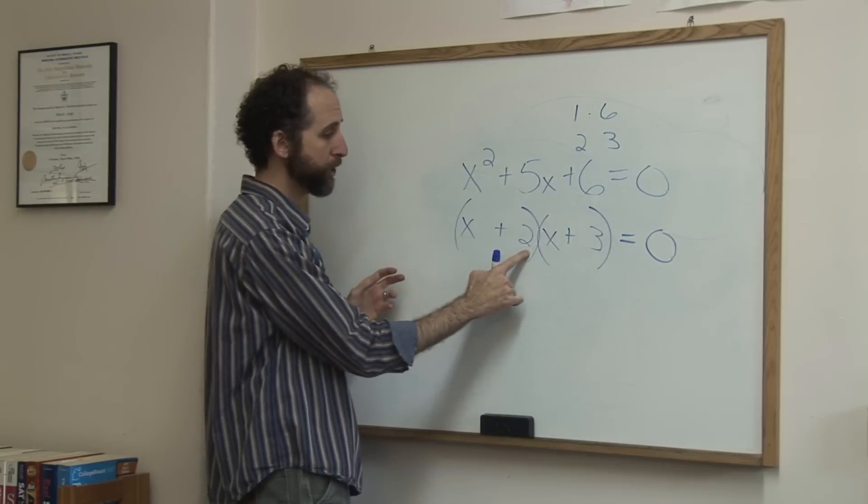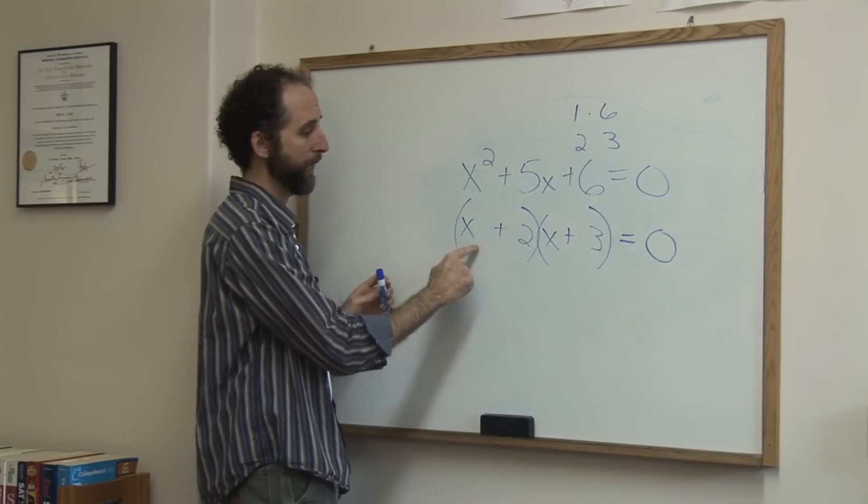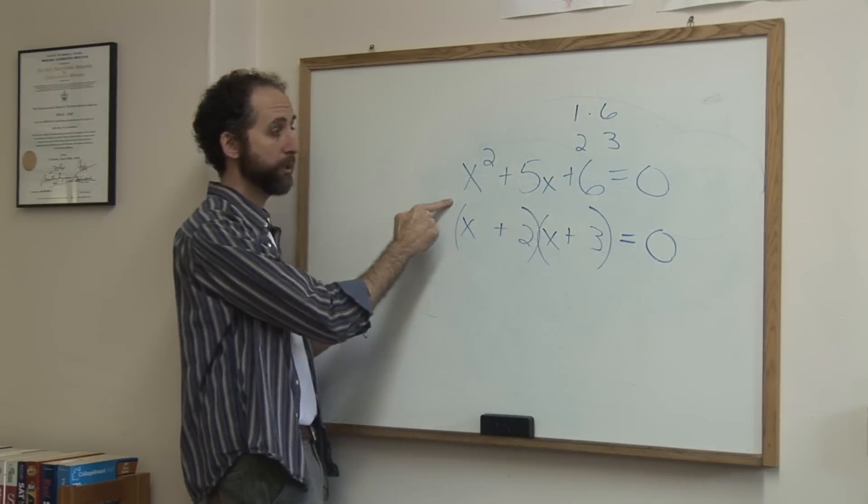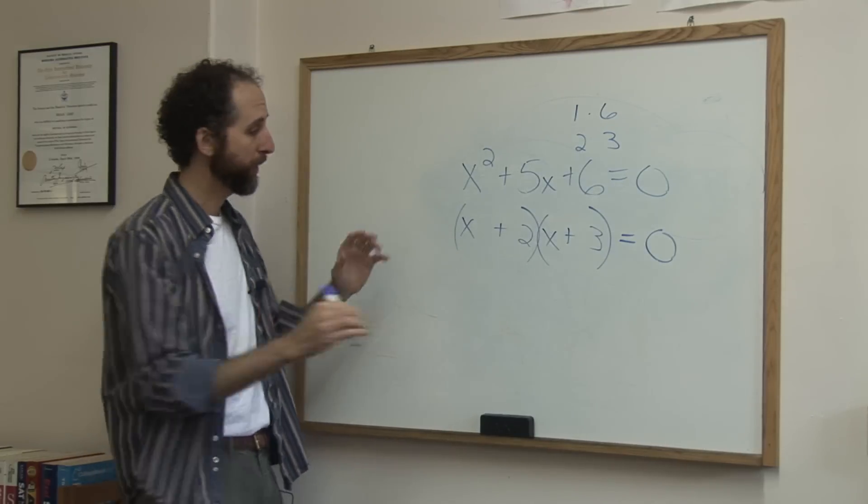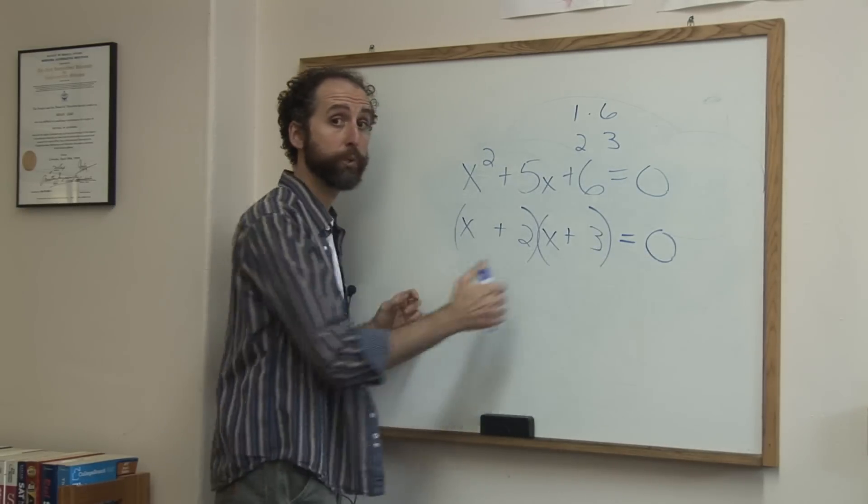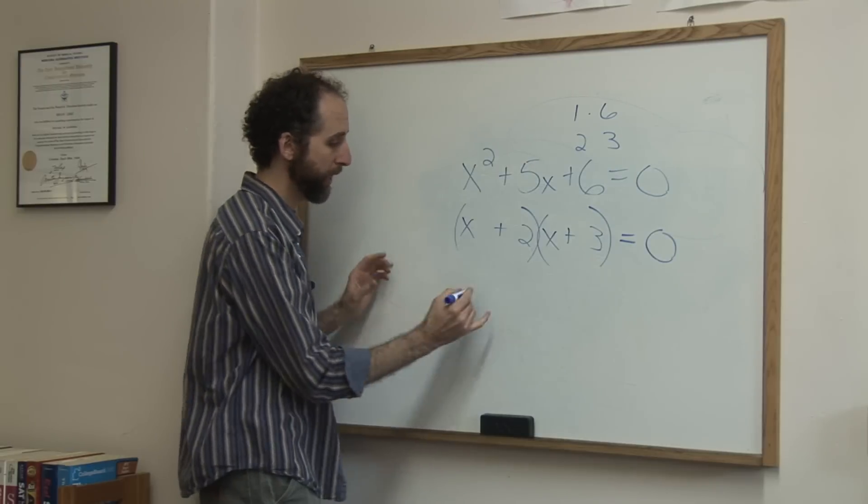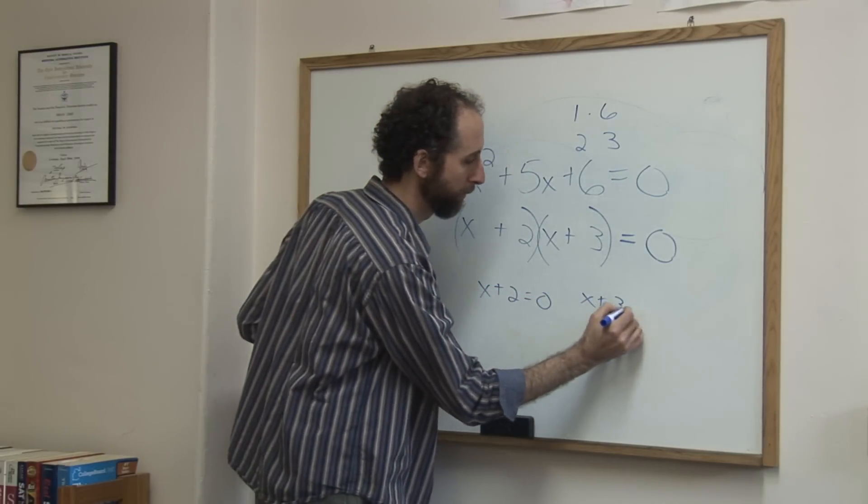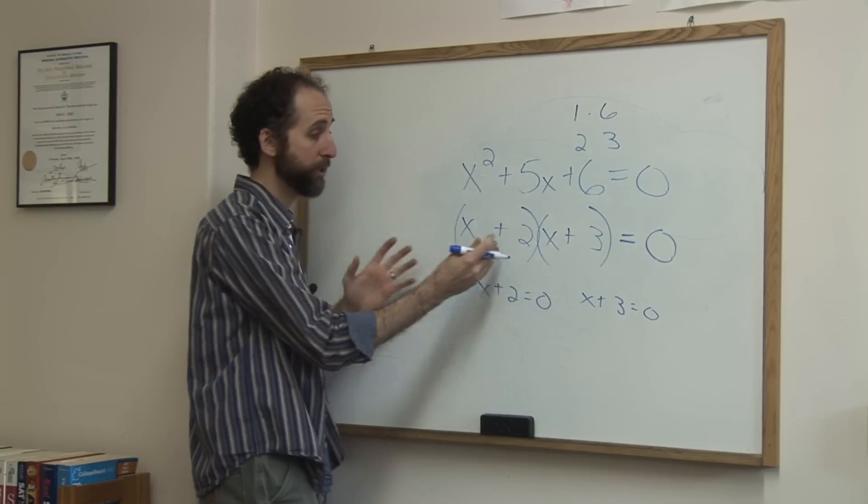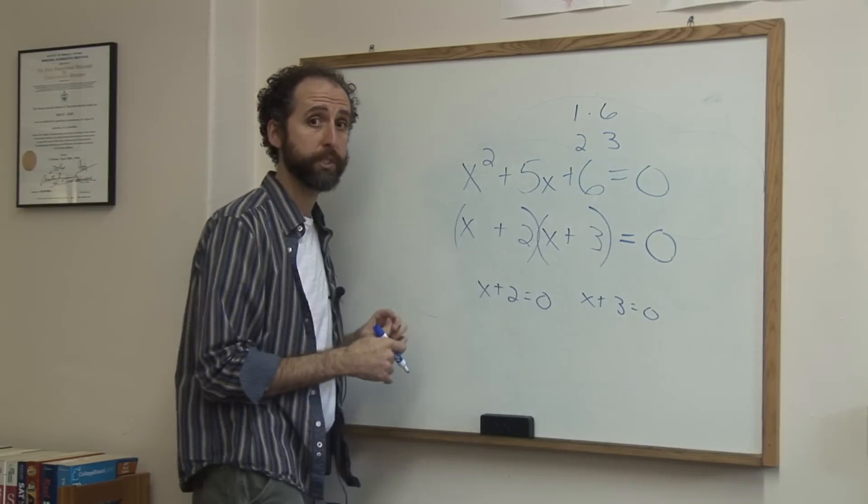So x plus 2 times x plus 3 equals 0, and x plus 2 times x plus 3 equals that quadratic. Now what does x equal? Well, because this times this equals 0, we're going to set each of these equal to 0. Either this guy is 0 or that's 0, because 0 times anything would give us the 0.